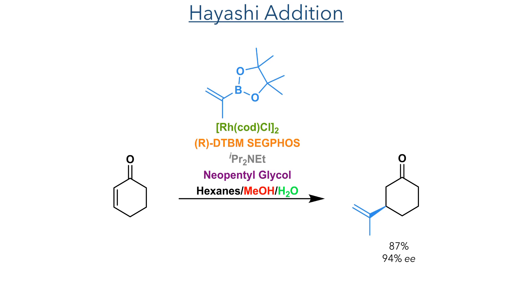To begin their synthesis, they first needed to make R-norcarvone. The published method for this takes seven steps and is rather inefficient, so they devised a new three-step strategy starting with a Hayashi addition. This reaction is an asymmetric rhodium-catalyzed 1,4-addition, using an isopropenyl boronate to stereoselectively install the allyl group at the 3-position.